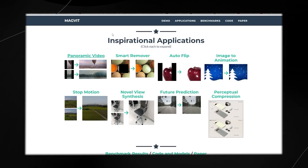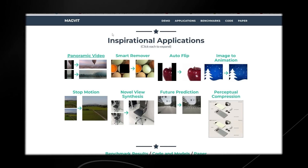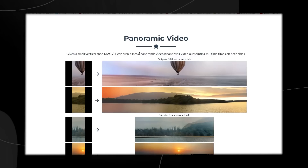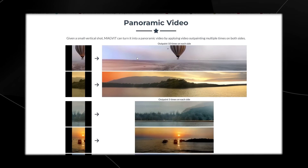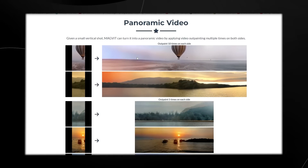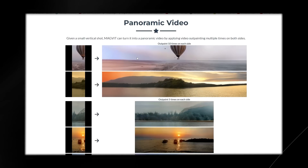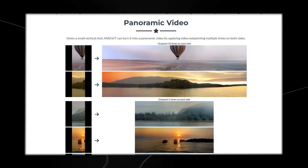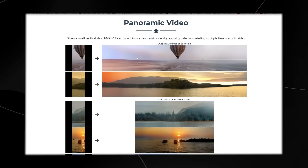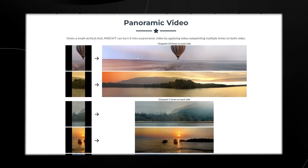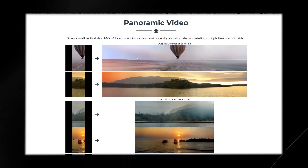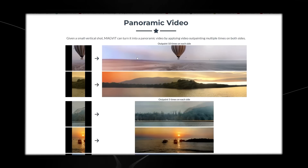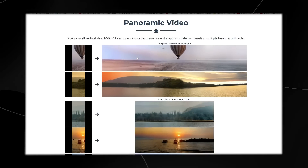Video AI is still relatively novel, so over time we're likely to get further increases in the level of quality of this kind of software. The first application is panoramic video. If you don't know what a panoramic video is, it's essentially a type of video that is very long in its frame — like taking a panoramic photo on your iPhone or Android. MAGVIT states that given a small vertical shot it can turn it into a panoramic video by applying video outpainting multiple times on both sides.